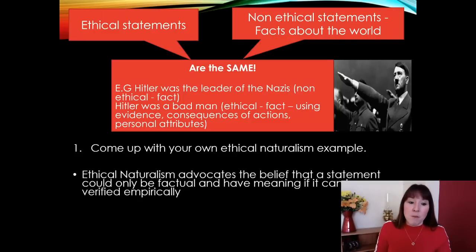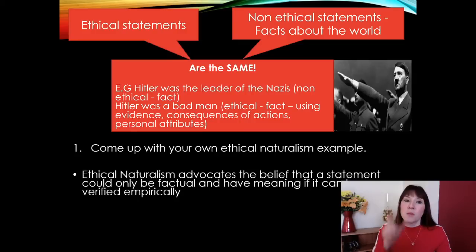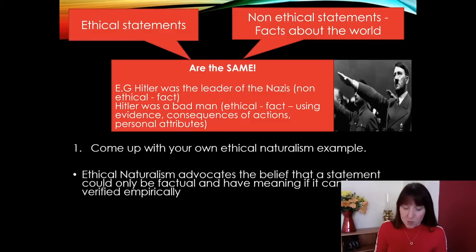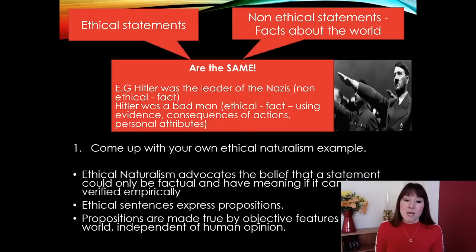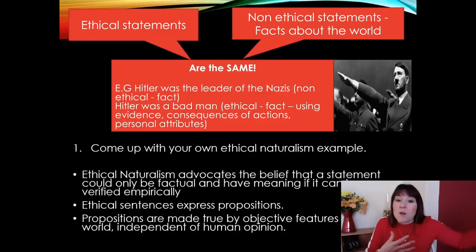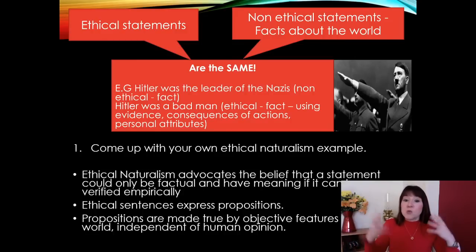Ethical naturalism advocates the belief that a statement can only be factual and have meaning if it can be verified empirically — that bit is very important. You have to be able to prove using the senses that a statement is a fact. So even though an ethical word is used, you can find enough evidence to prove it is fact. Ethical sentences express propositions — statements of reason or logic. Propositions are made true by objective features of the world independent of human opinion. 'Hitler was a bad man' — there is so much evidence it becomes an objective feature of the world, an ethical absolute fact.